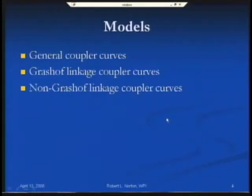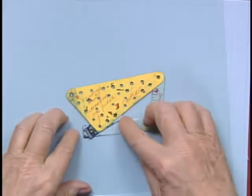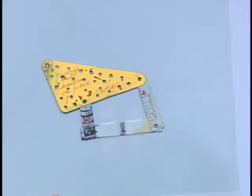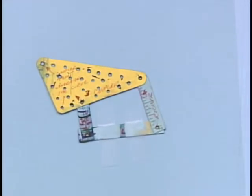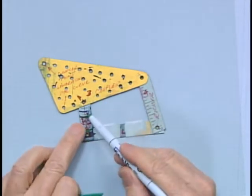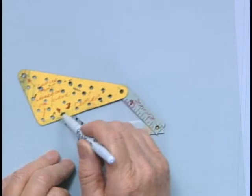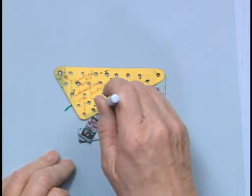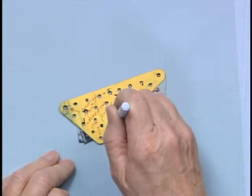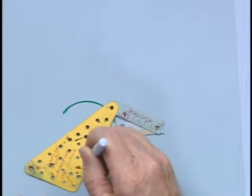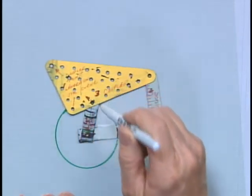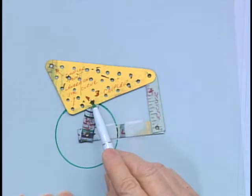I'm going to demonstrate these with a few cardboard models so you can get a sense of how these curves are generated. I've punched the coupler full of holes so I can trace with a pen. Here is link two; that point is instant center two-three, which is a coupler point — but it's going to trace a circle. This is a Grashof linkage.